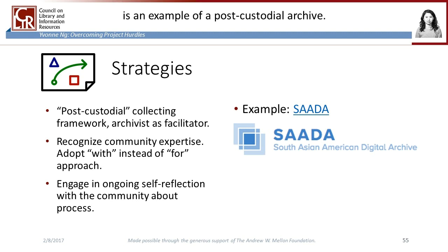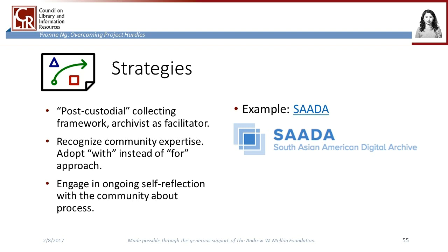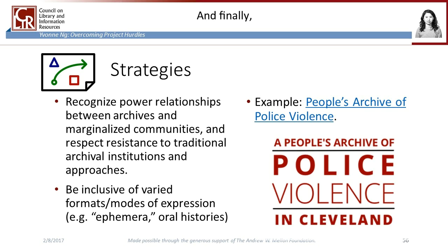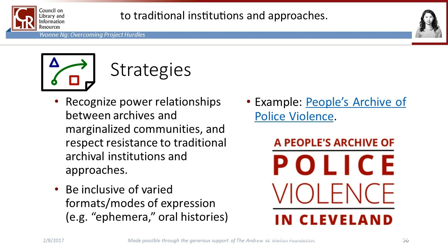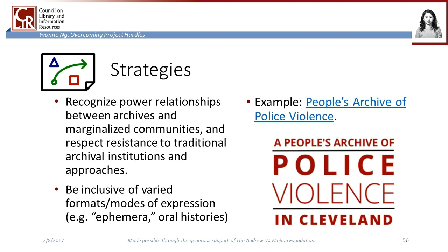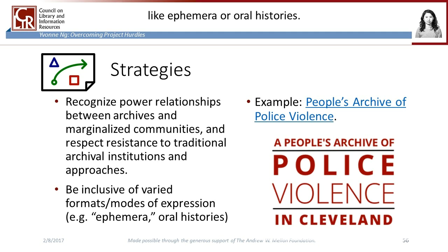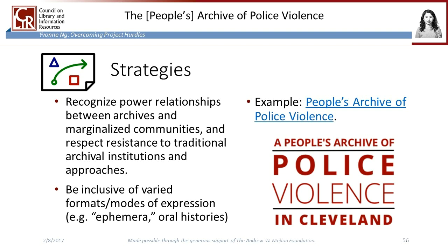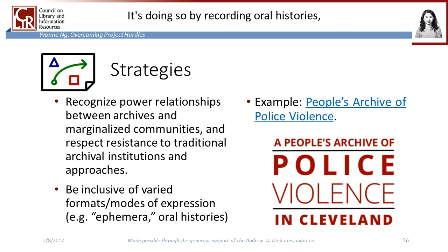The South Asian American Digital Archive is an example of a post-custodial archive. On their website, they've discussed their approach and gathered feedback from their community to better understand needs and interests. Finally, recognize power relationships between archives and marginalized communities, and respect any resistance to traditional institutions and approaches. Instead of feeling misjudged or guilty, try to build understanding and address ways of doing things that exclude or oppress. One way to open up archives to a more diverse community is to be inclusive of varied formats or modes of expression, like ephemera or oral histories. There are different ways that experiences can be documented and shared besides written records. For example, the People's Archive of Police Violence in Cleveland is a non-institutional community archive that collects stories of encounters with law enforcement by recording oral histories, collecting community organizing documents, and openly inviting online contributions in diverse formats. In recognition of specific risks to its community, it deliberately avoids collecting provenance and identifying information from its contributors.